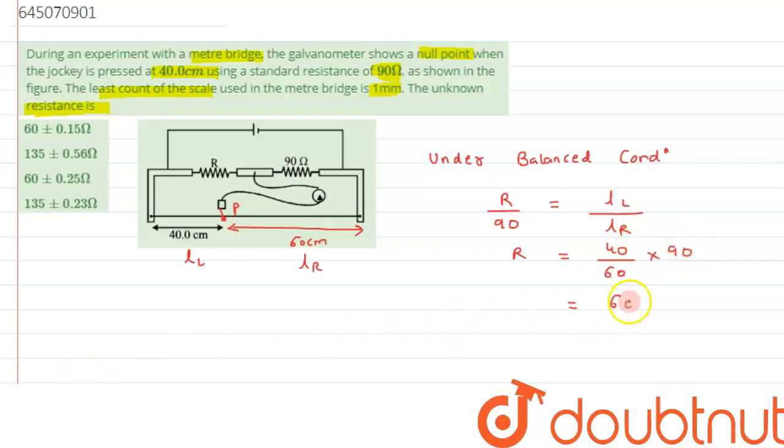So this is the value of unknown resistance. From the options, if we carefully analyze, among option A and option C one is the correct answer. We can directly discard B and D since the resistance value is 60 ohms.